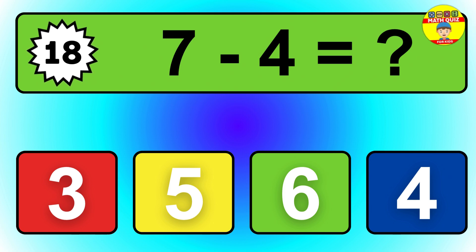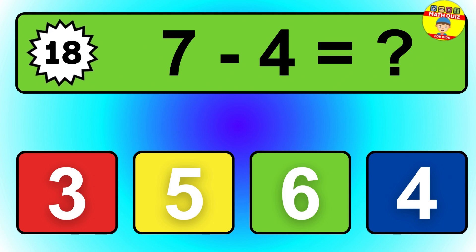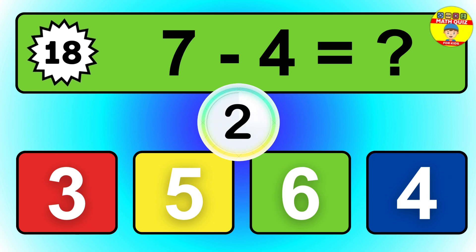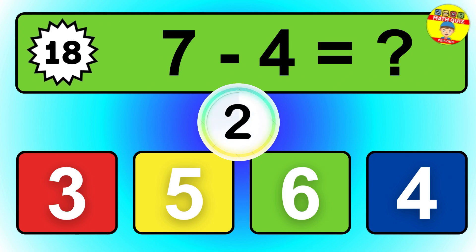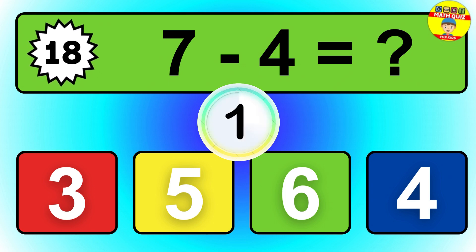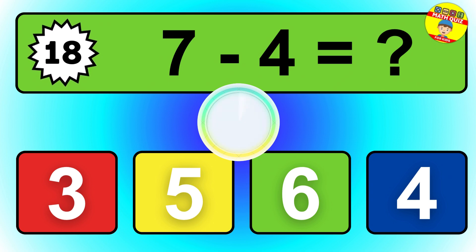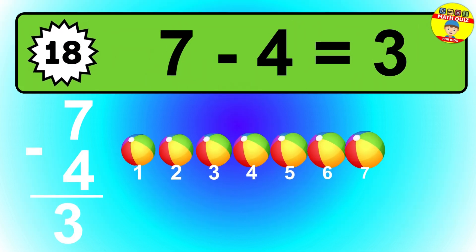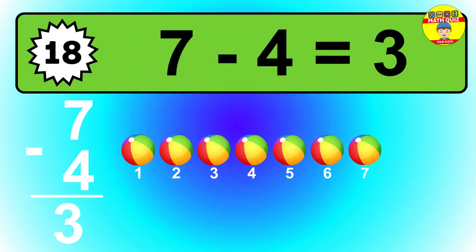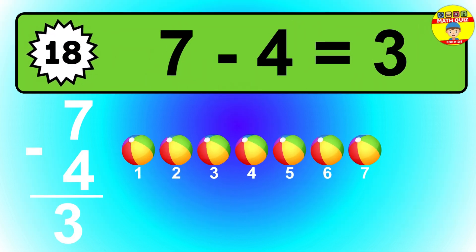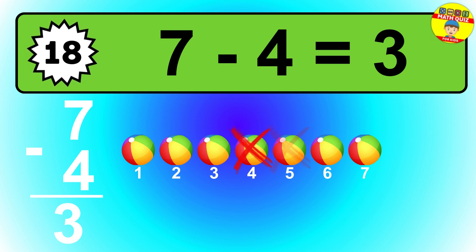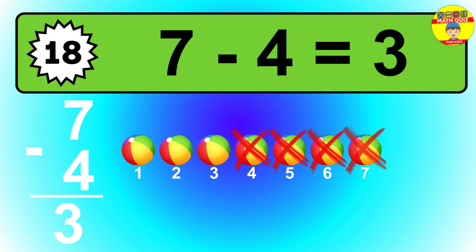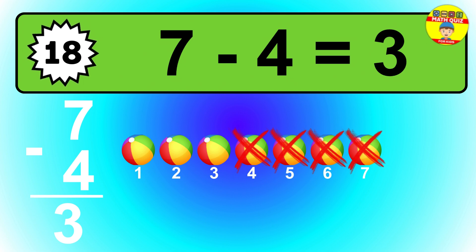Question 18. 7 minus 4 equals what? So the answer is 7 minus 4 is 3. Let's count it: 1, 2, 3.